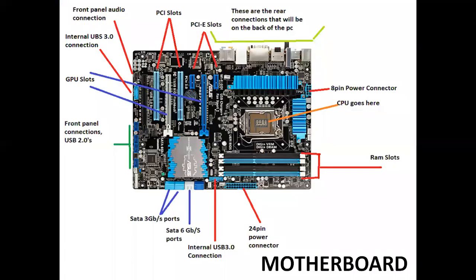Here is an example of a motherboard. As you can see, there is a slot for the CPU, a RAM slot, an 8-pin connector, a front panel audio connector, and more.